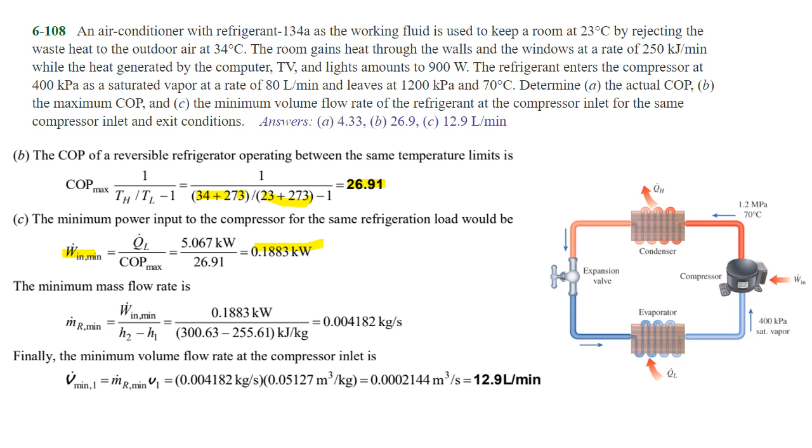Then you can work backwards to calculate the minimum mass flow rate. It's that power divided by the change in enthalpy, which is 0.004182 kilograms per second. Finally, you can calculate the minimum volume flow rate to be 12.9 liters per minute. Again, parts b and c are just theoretical values you can never achieve, but they tell you what's the best you could ever do.